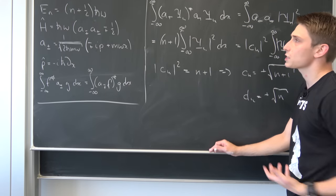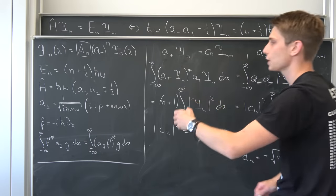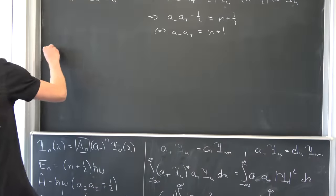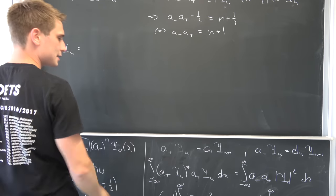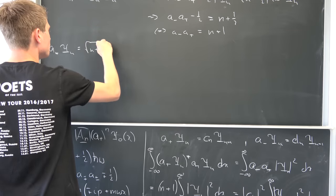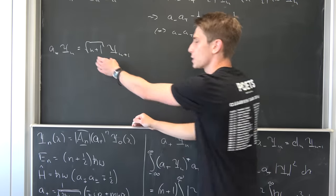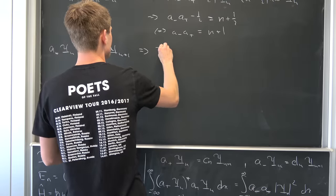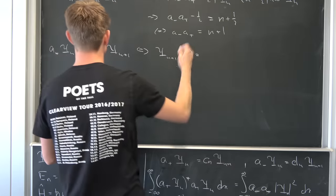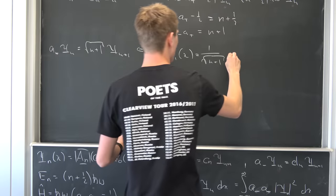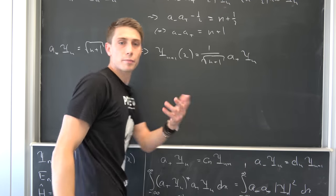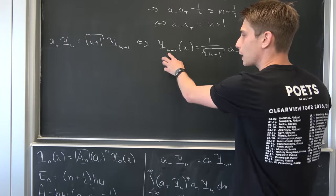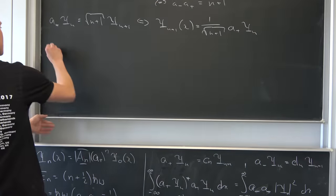We have now found those factors. The key result for raising the state repeatedly is: a₊ ψₙ = √(n+1) ψₙ₊₁. Dividing both sides by √(n+1) — which is never zero for n ∈ ℕ — gives ψₙ₊₁(x) = (1/√(n+1)) a₊ ψₙ. Let's plug in some values for n to see if we notice a pattern.